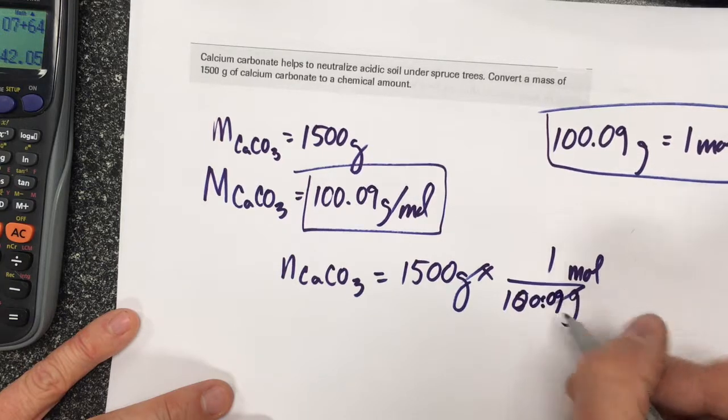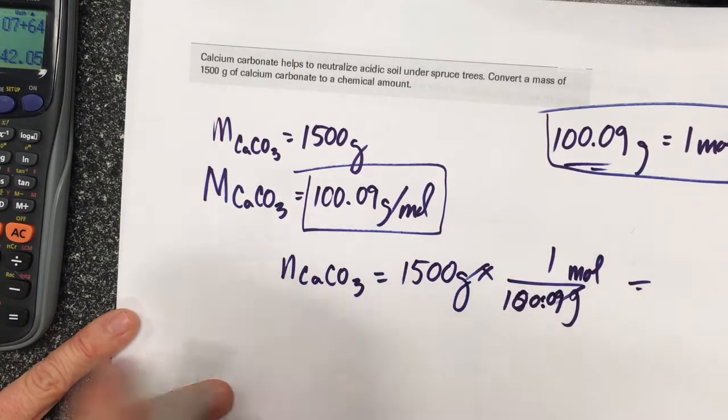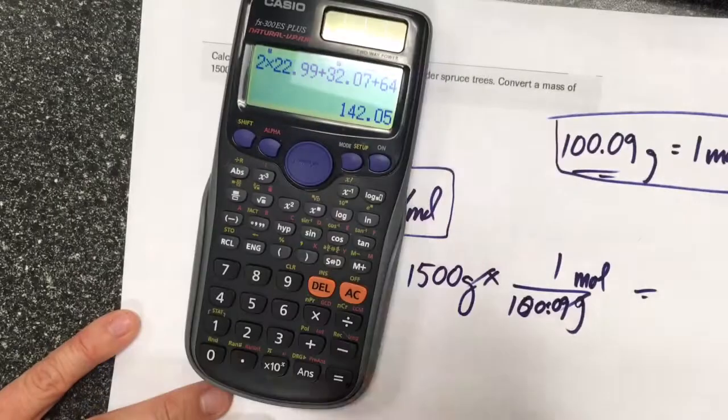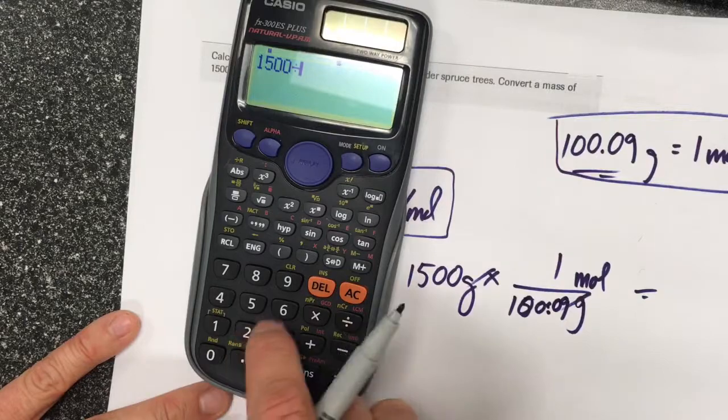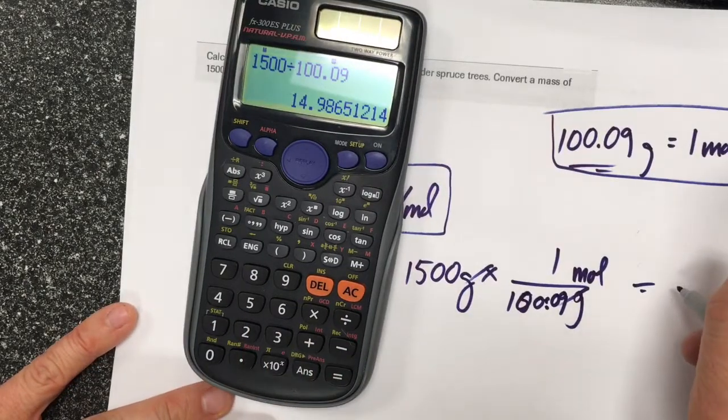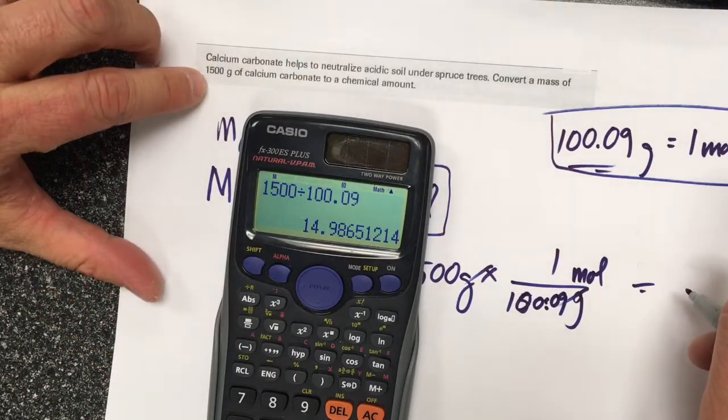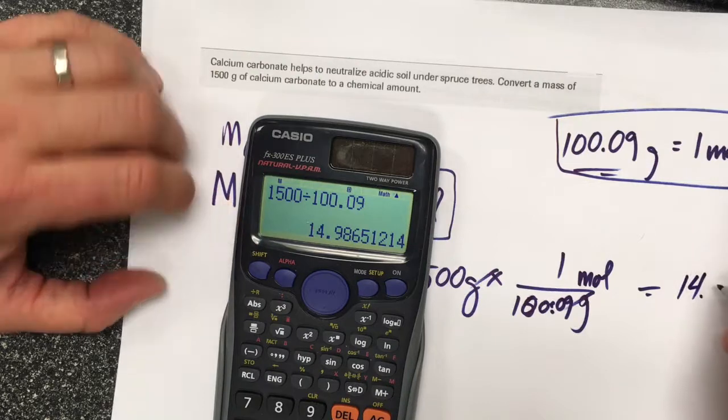1500 divided by 100.09 gives me 14.9865. This has four significant digits, so this should realistically have four sig figs as well, and it's going to be 14.99 moles of calcium carbonate. That's one way of calculating it.